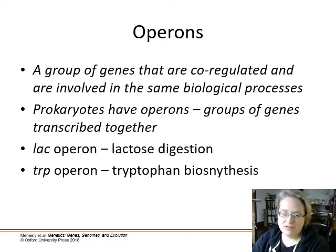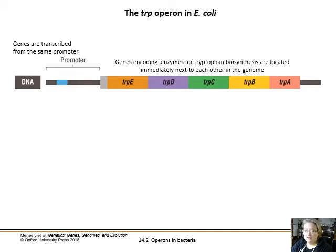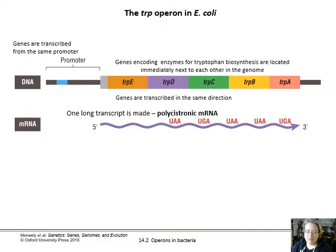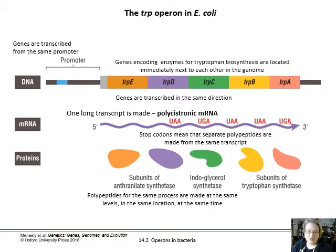Here's the tryptophan biosynthesis operon, the trp operon, in E. coli. All these genes are under the control of one promoter. The genes encoding enzymes for tryptophan biosynthesis are located immediately next to each other, so they get transcribed all together in the same direction. A big long mRNA is made called a polycistronic mRNA. It has multiple stop codons, so ribosomes will make one of the five different enzymes. All those peptides for this same process are made at the same level, at the same location, at the same time — a very handy, evolutionarily beneficial system.